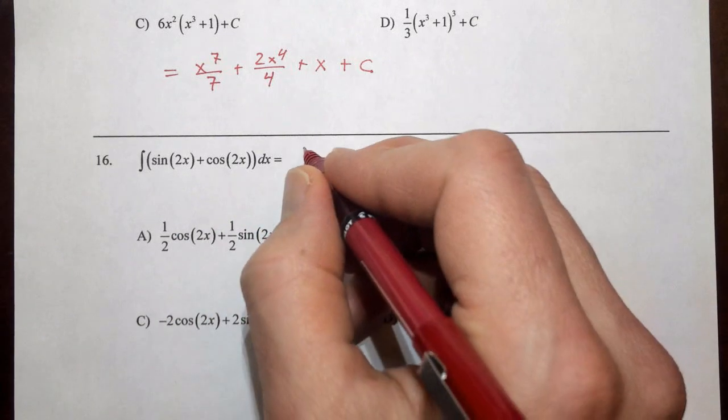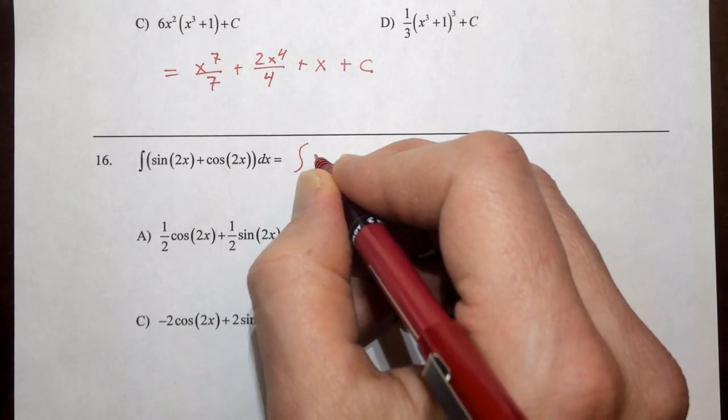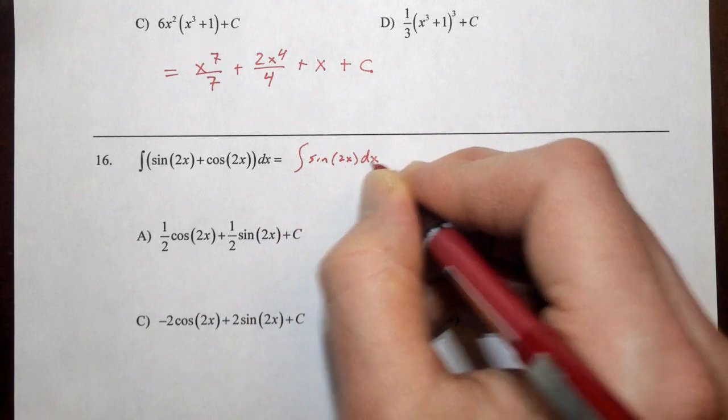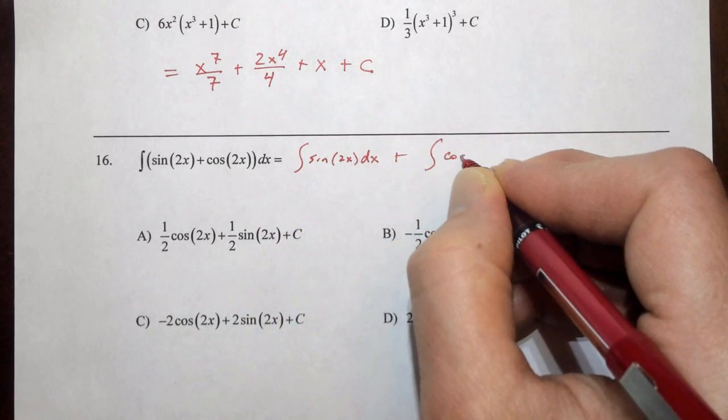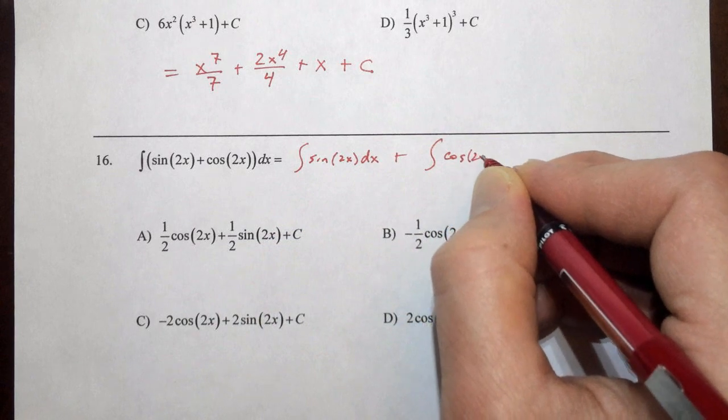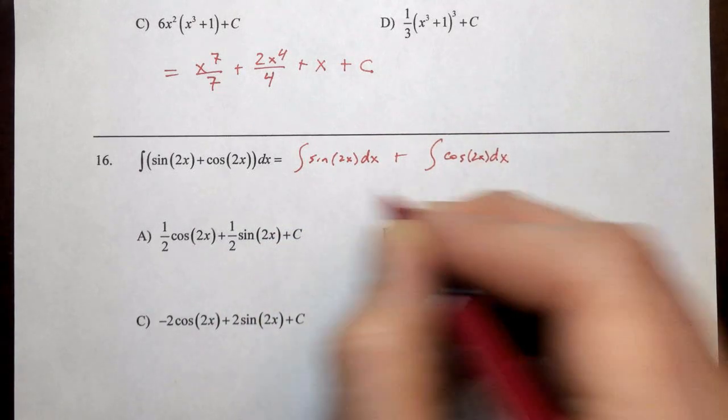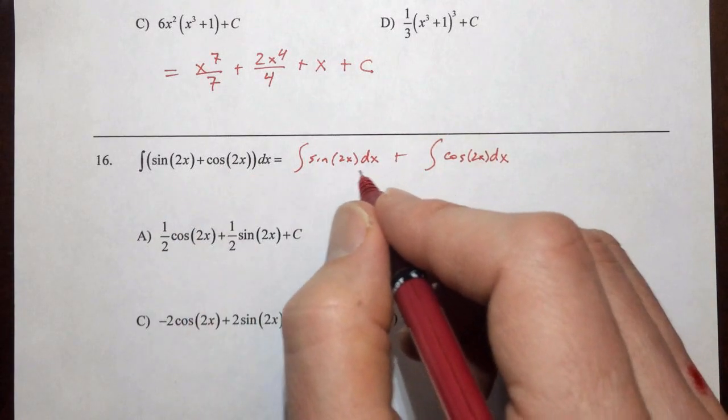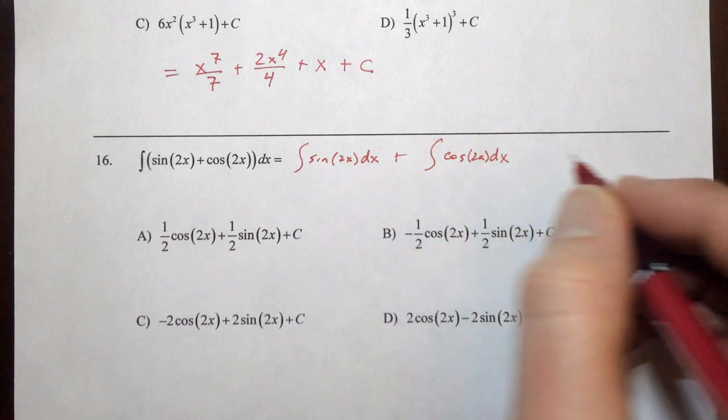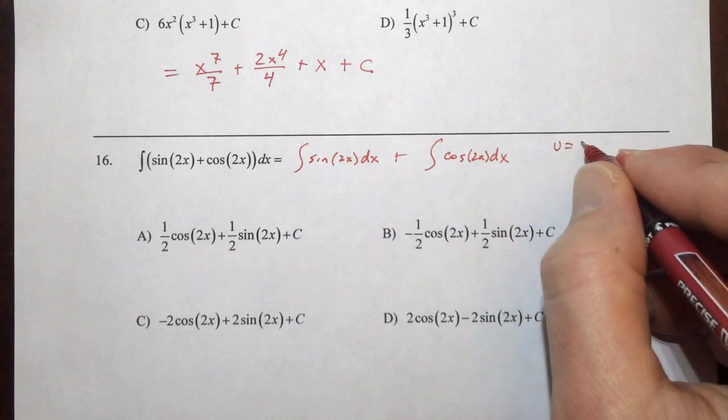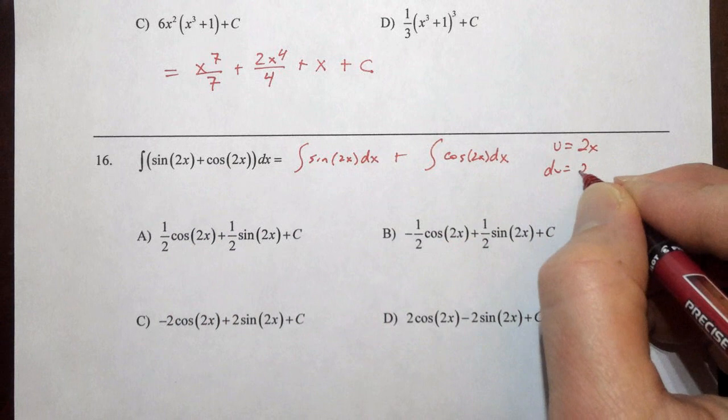You can break this up into the antiderivative of sine of 2x dx plus antiderivative of cosine 2x dx. We can do that. You can actually get away with not doing that, but if you prefer, you certainly can. Now we have our u is equal to 2x and du is equal to 2 dx,